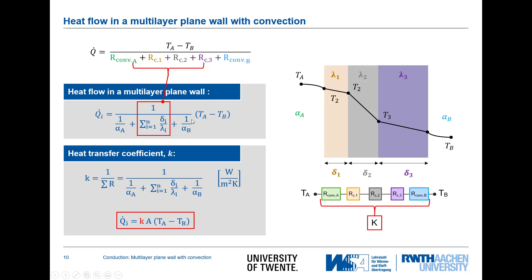We can convert the total resistance into an overall heat transfer coefficient k, defined as one over the total resistance. This coefficient k is similar to the individual convective coefficient alpha but now accounts for the full system: it incorporates both empirical convective coefficients alpha on each side and all the conductive resistances of the layers, all combined into one single heat transfer coefficient.